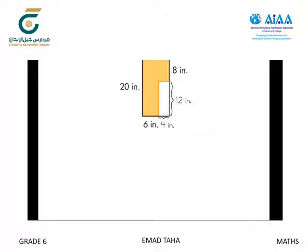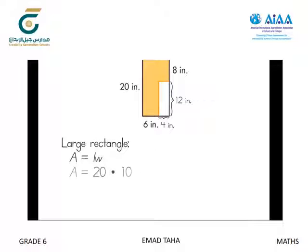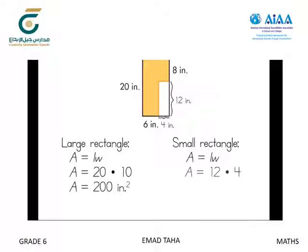Next, they find the areas. The area of the large rectangle is 200 square inches, and the area of the rectangle not covered by the polygon is 48 square inches.